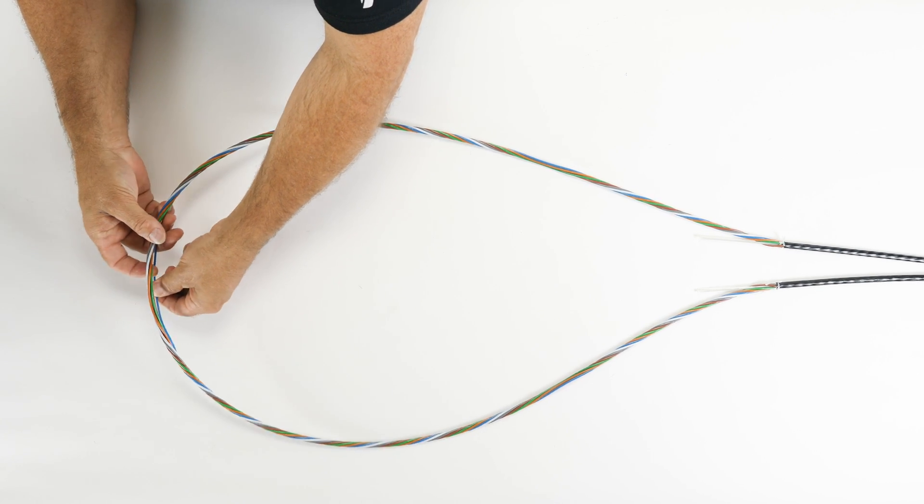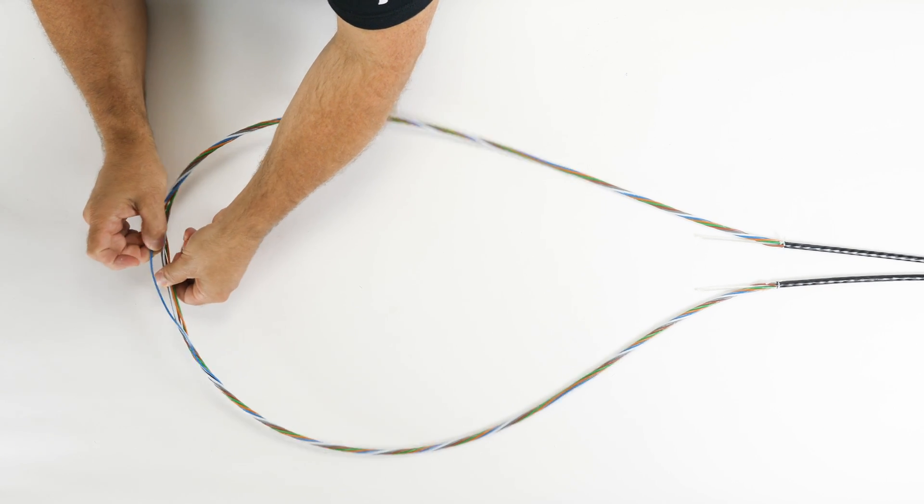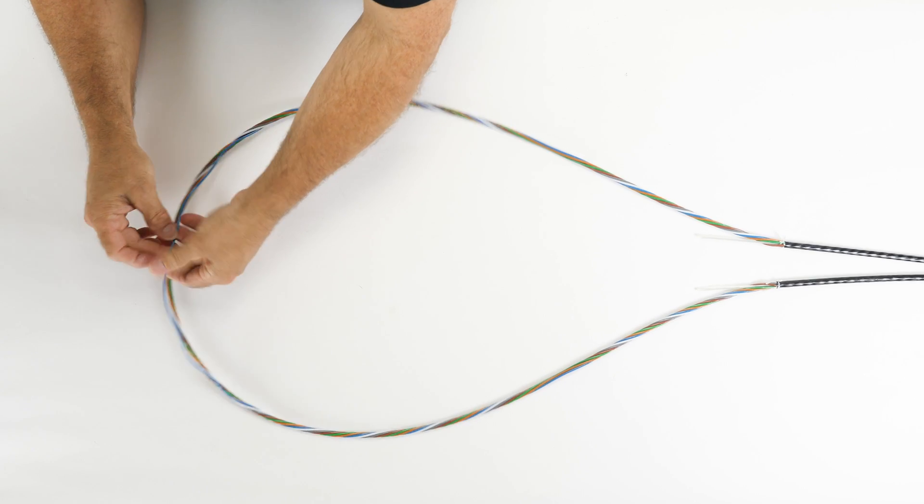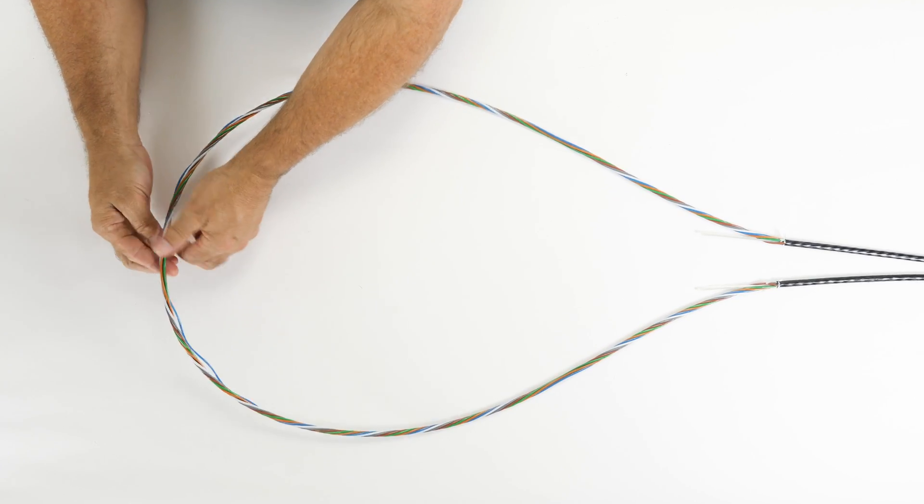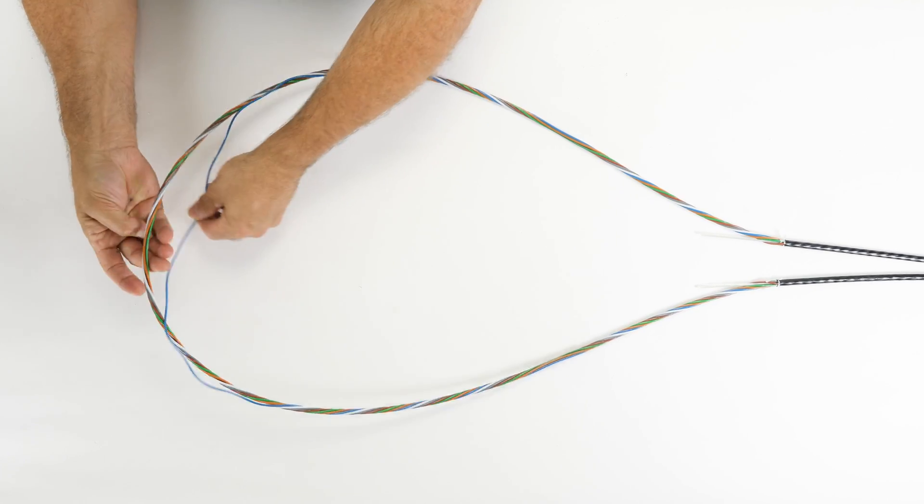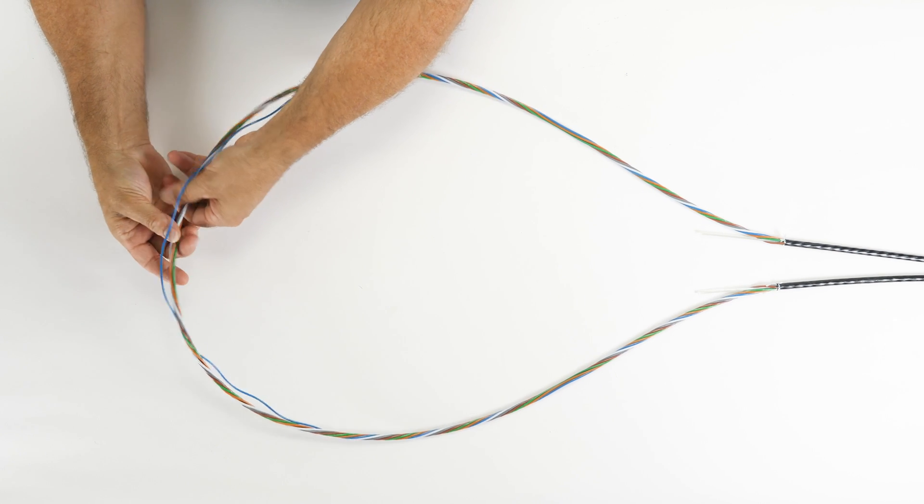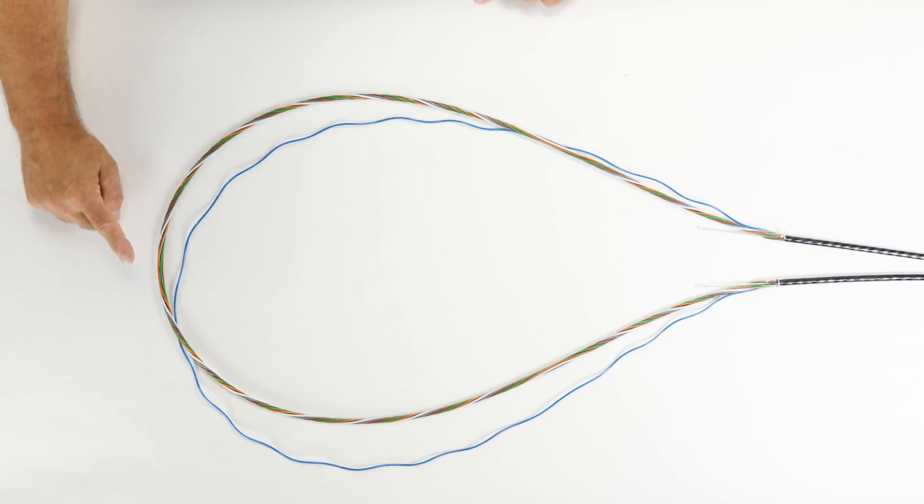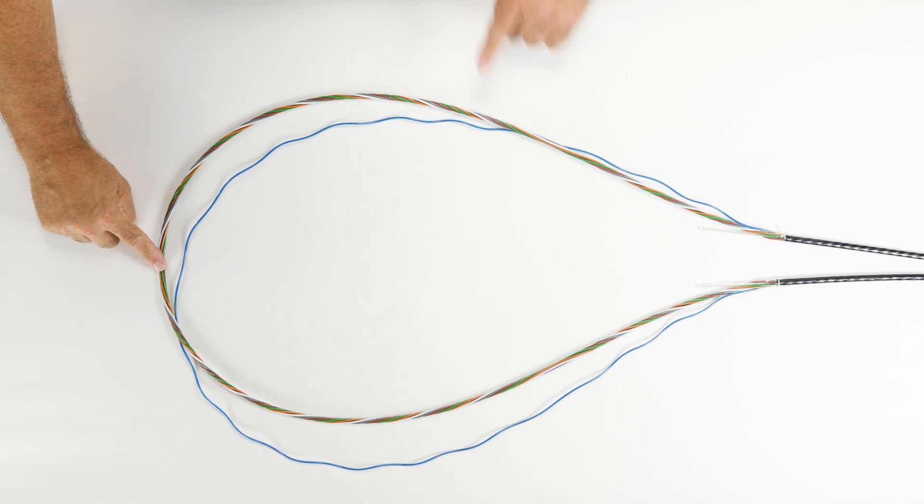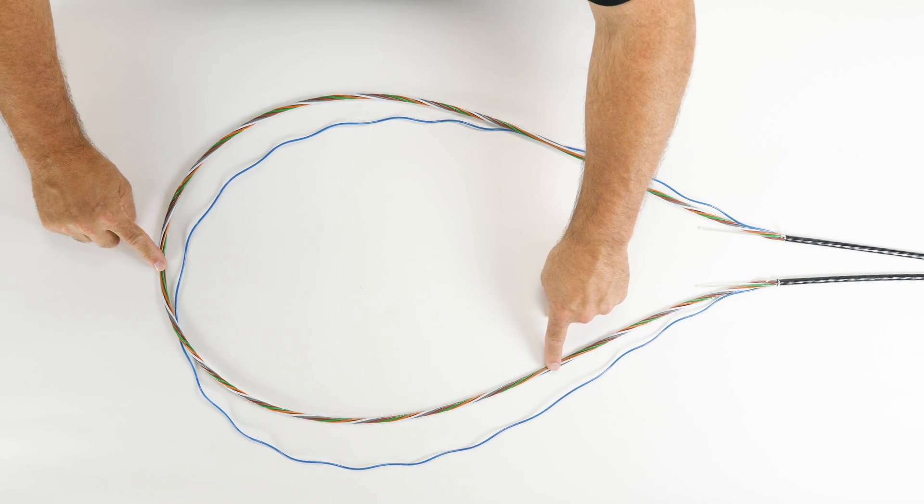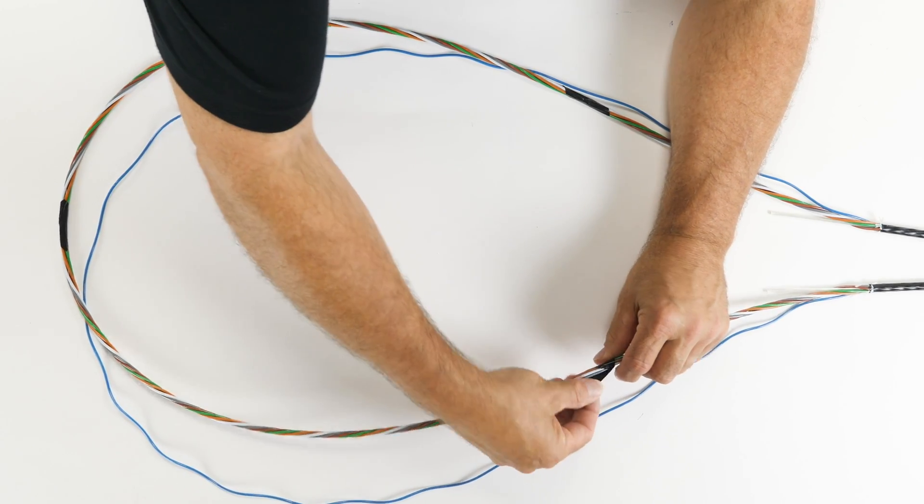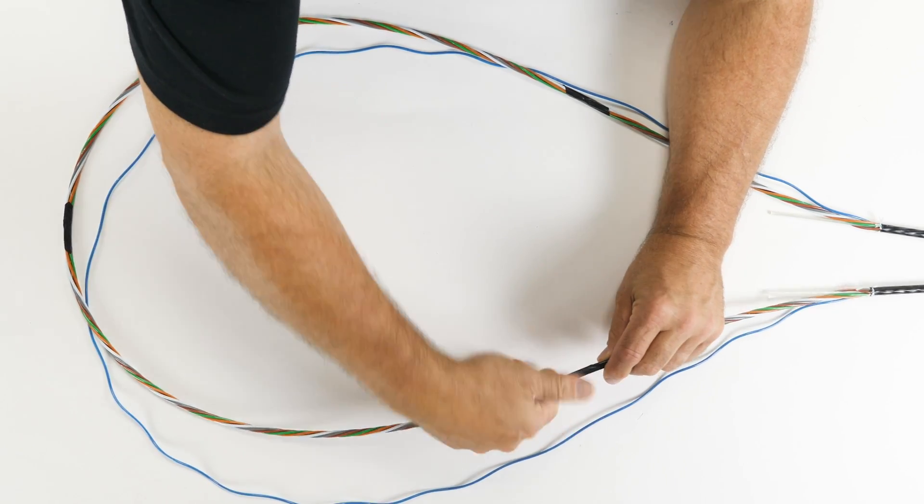Separate out the buffer tubes that will be entering the splice tray. Place a small 2-inch piece of electrical tape at an angle over each of the oscillation points within the remaining buffer tube bundle. Note, the taping process will help to fold the remaining buffer tubes into the splice closure.